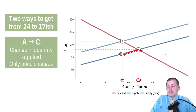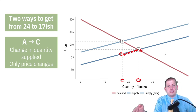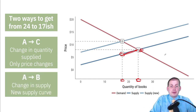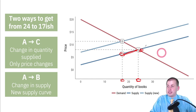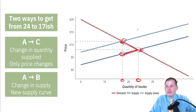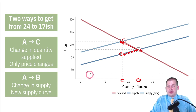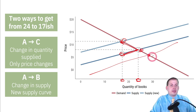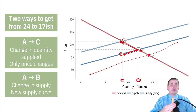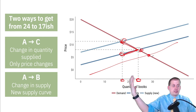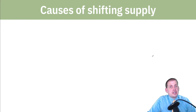You could also see fewer books being sold but at a higher price — that would represent a new supply curve entirely, a more structural change, moving from point A to point B. Going the other way, if a new factory or machine is invented so you can make more books more cheaply, that's a whole new supply curve — a structural change.